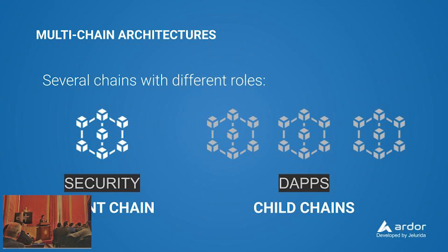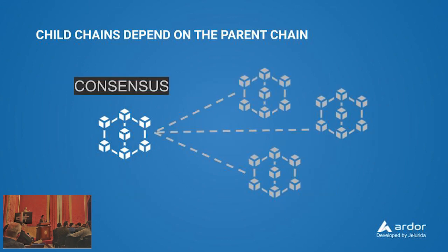There is a parent chain whose main role is to keep the security of the system, and on the other side we have child chains which can build decentralized applications. So these roles are separated, because the child chains that build decentralized applications cannot perform the consensus algorithm — it is the parent chain that validates transactions by performing the consensus algorithm for all the ecosystem.